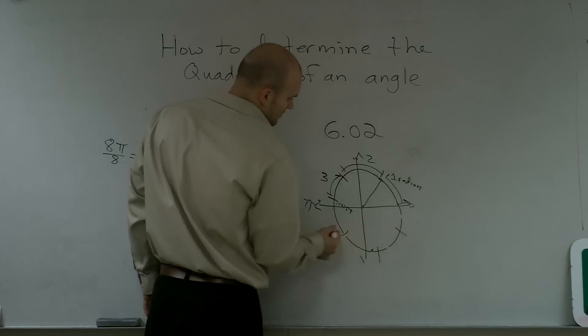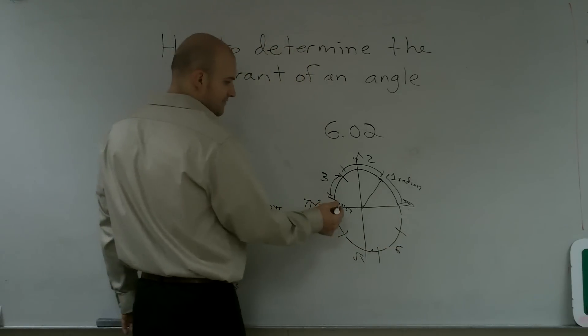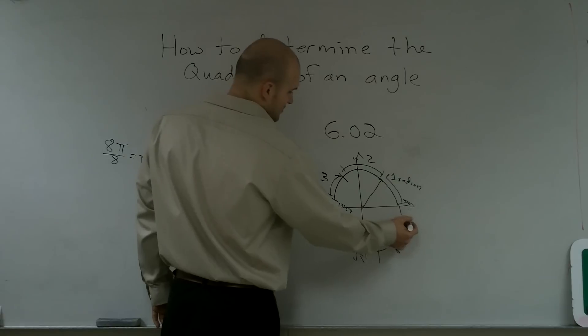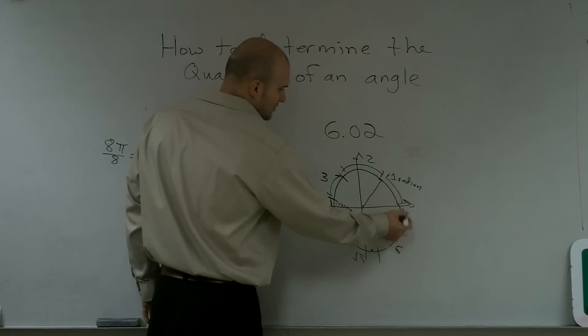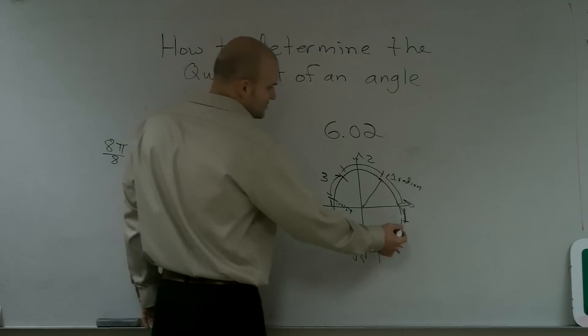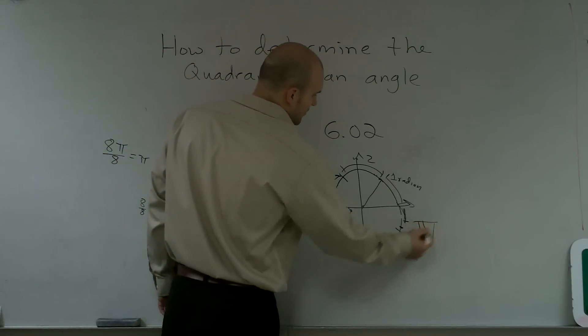So this would be my 4th radian, my 5th radian, my 6th radian. And then for here, I would have, it would be like 0.2. Well, it would just be this area, now doubled. So 6.0 is going to be somewhere right around here. So it would be quadrant 4.